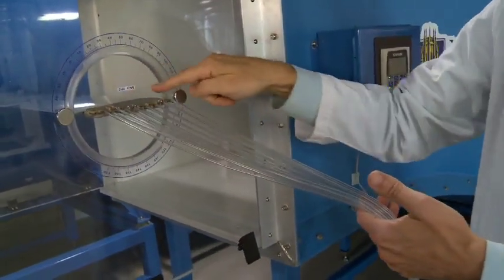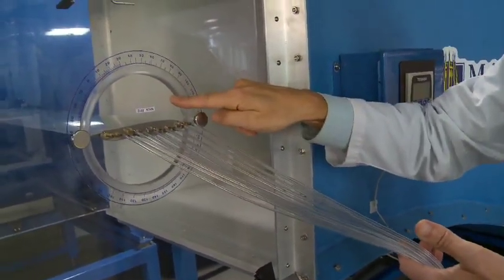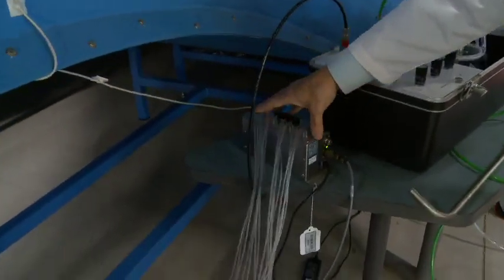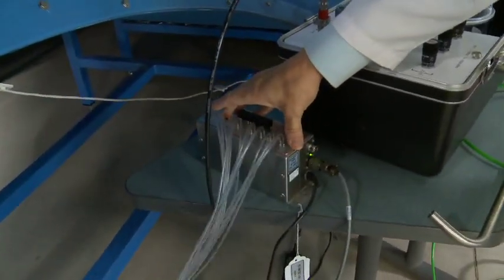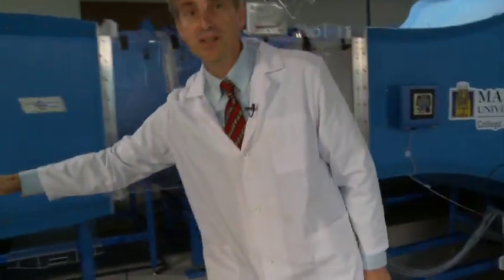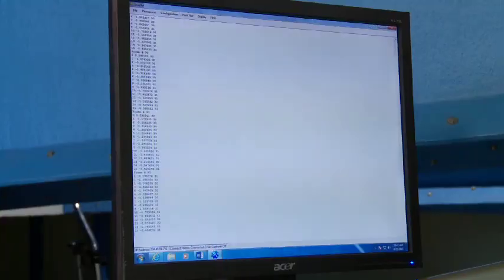These pressure taps will measure the static pressure across the top of the airfoil and it's connected then to our Scani valve which will make the measurements for us. The Scani valve is then connected to the computer and from there we can record the data in real time.